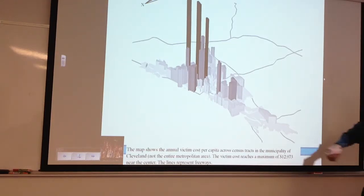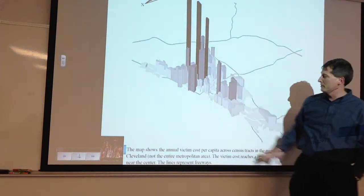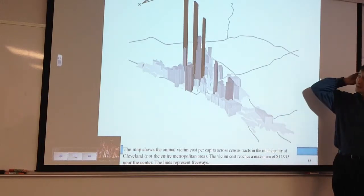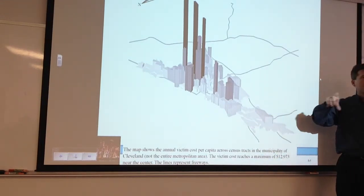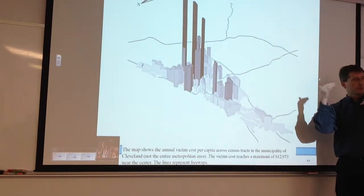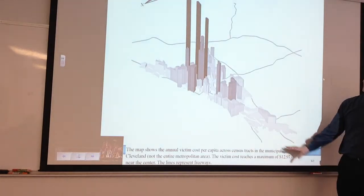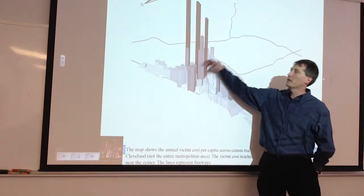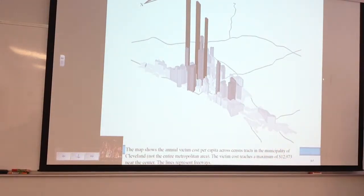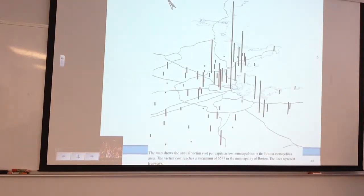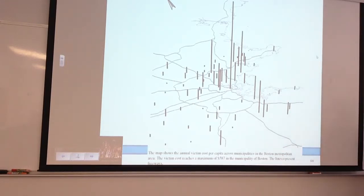Here are some crime cost maps — I like these three-dimensional ones. The height shows annual cost per victim. Economists did some estimates of what a crime costs, putting a price tag on the type of crime — the average monetary damage to somebody. This shows where within the city those crimes are taking place. That's Cleveland. And here's the cost of crime in Boston — we don't see an even distribution throughout.